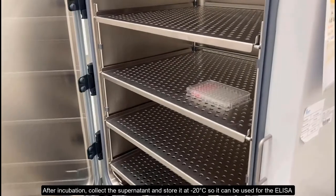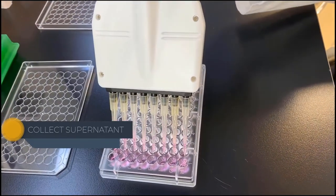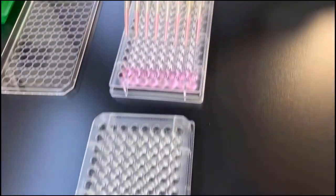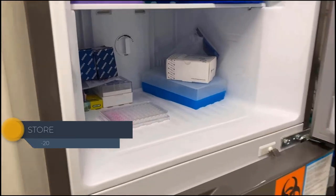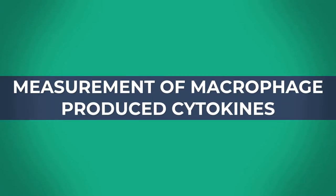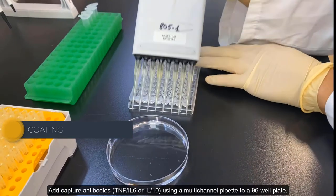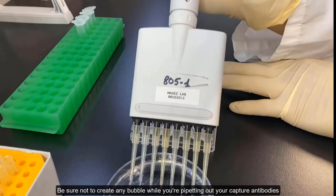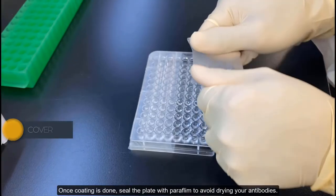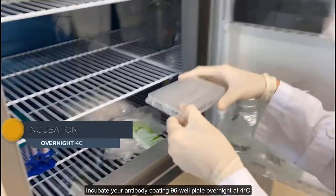After incubation, collect the supernatant and store it at minus 20 so it can be used for the ELISA. First, I'm going to add my capture antibody such as TNF-alpha, IL-6 or 10 using a multi-pipetter channel to a 96-well plate. Be sure not to create any bubbles while you're pipetting out your capture antibodies. Once coating is done, seal the plate with parafilm to avoid drying your antibodies. Then incubate your antibody-coated 96-well plate overnight at 4 degrees Celsius.